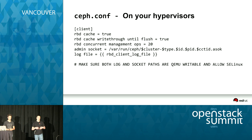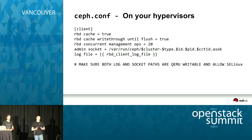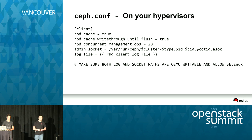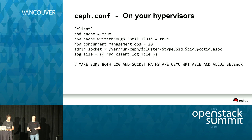Those two settings are the defaults in Hammer, but if you're using an earlier version of Ceph, you probably want to enable them on your hypervisor. Since Firefly, RBD has supported parallelization of management operations like deleting images — if you want that to go faster, you can increase from the default of 10 operations to 20. The next option is the admin socket, which you'll see commonly in Ceph daemons, where you can introspect their state and see what's going on. It can also be useful on the hypervisor side to see what an RBD volume is doing, how many ops it's doing, and for debugging — you can see which requests are currently in flight, what they're waiting for, if they're stuck.